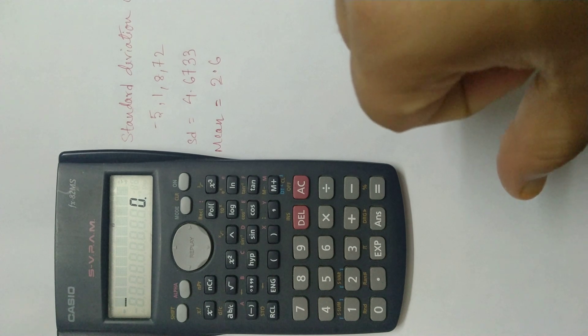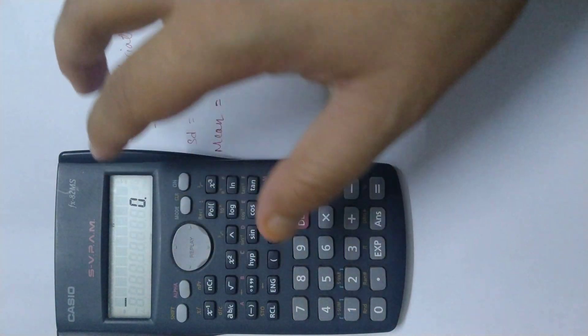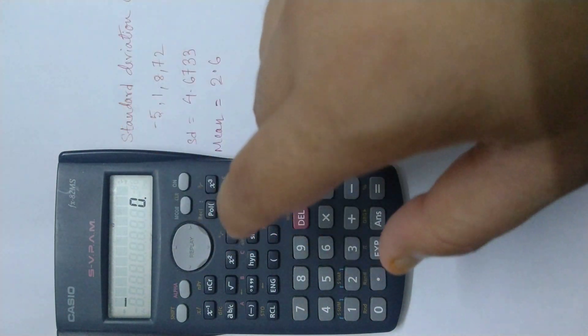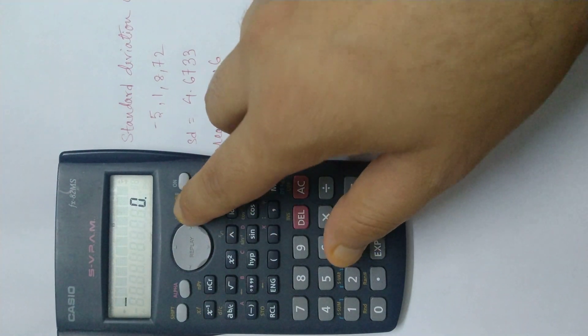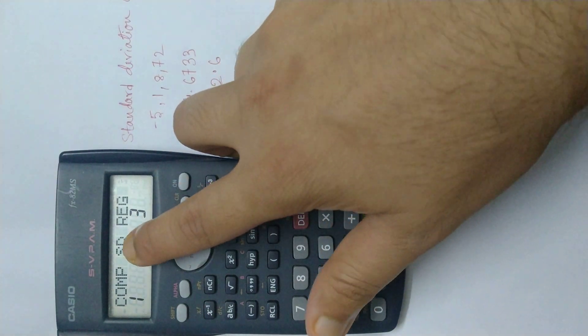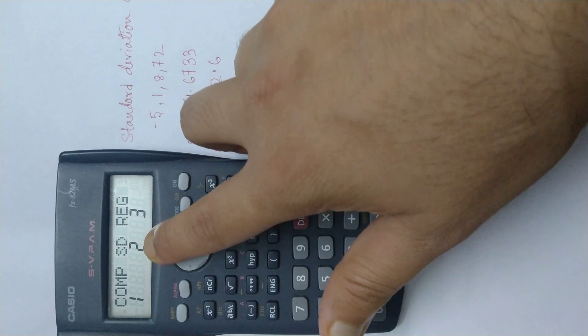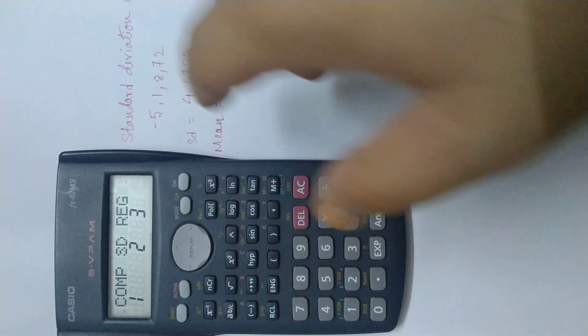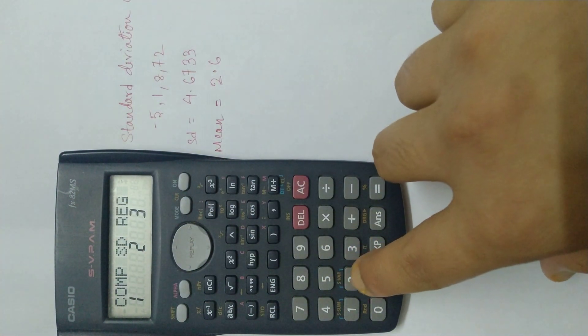Now we have to enter the standard deviation or the statistical form. For that we have to press mode and then press 2. It is SD, that is statistics or standard deviation. Then we have to press 2.